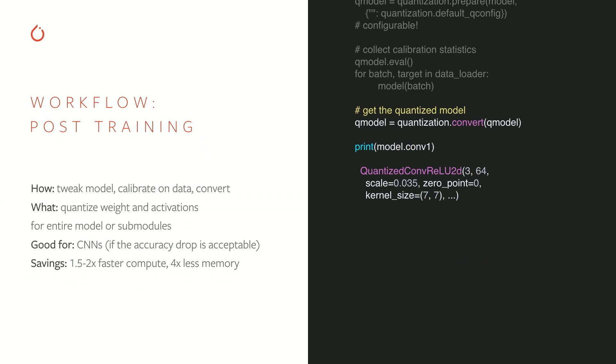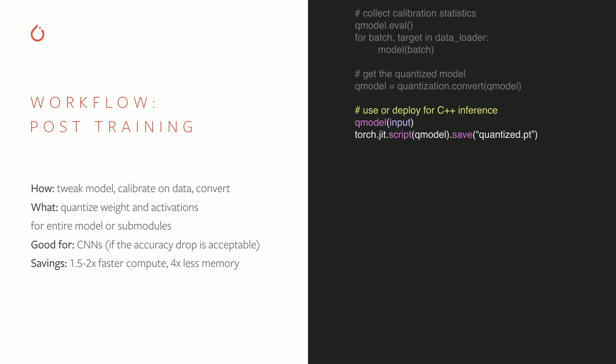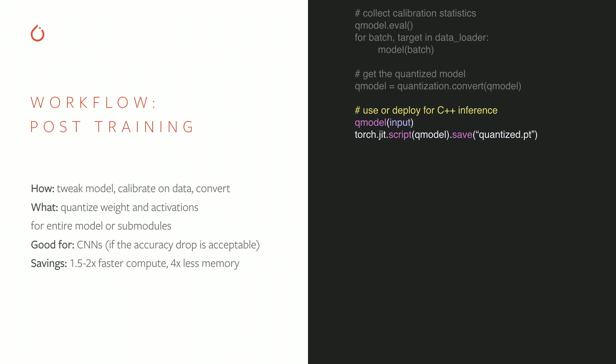After calibration, each supported module gets swapped out with a quantized version that converts weights to int8 and makes use of estimated quantization parameters to carry out computations in int8 and upscale the activations at runtime. If you print those modules, you would see that a convolution has been turned into a quantized version of it. The resulting model can be used for inference directly in Python or saved as TorchScript for serving.